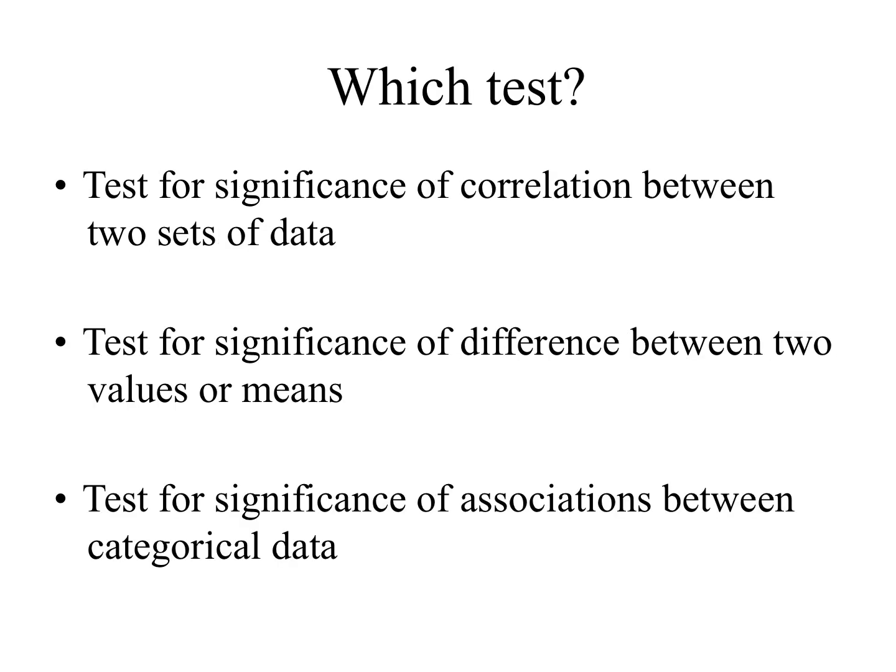In this first example, testing for the significance of correlation between two sets of data means that you've collected two sets of quantitative data and want to look for a link between them. Does an increase in one cause an increase or decrease in the second set of data?